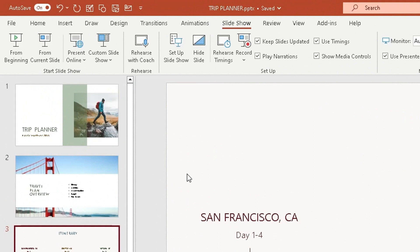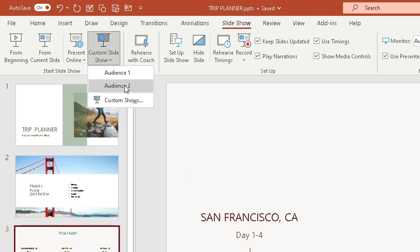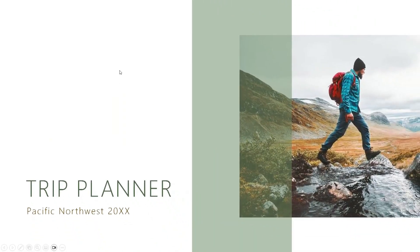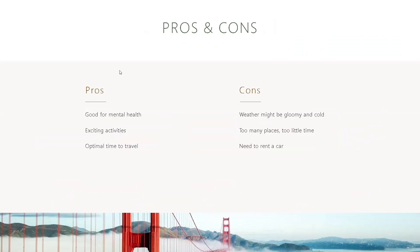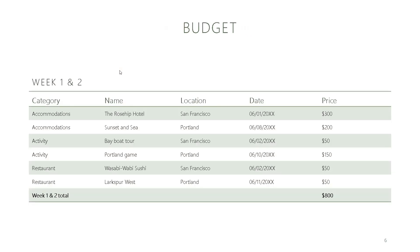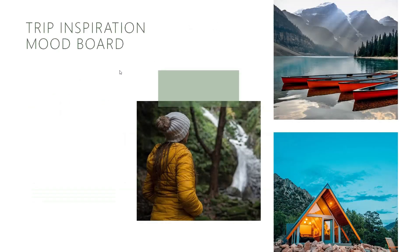Now for the second meeting with Audience Two, go back to Slideshow, go to Custom Slideshow, and choose Audience Two. This time it displays slide one, then jumps to slides four, five, six, seven, and eight. Notice how Pros and Cons appears before Budget — reflecting the order change we made in the slideshow settings.